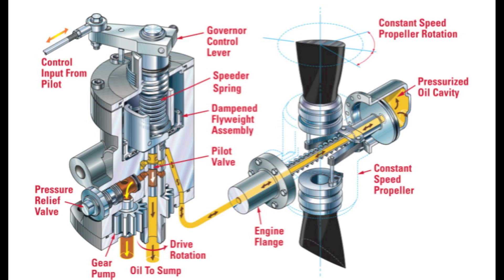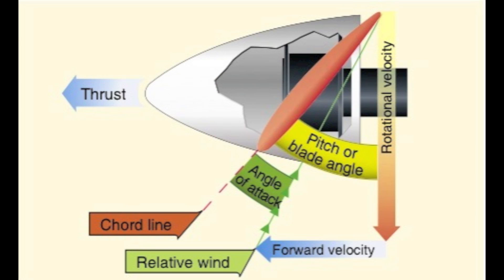The propeller uses a device called a governor to maintain the speed of the engine through varying the blade angle and pitch of the propeller. A governor is a mechanical device that controls the speed of the engine by varying the pitch of the propeller to match the selected RPM. Before we learn how this governor changes the blade angle of the propeller and therefore the pitch, we need to first learn how the propeller angle is moved.